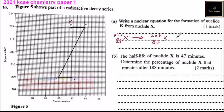So the equation is 213,83 X → 209,81 K + 4,2 He. That is how you write the equation to get one mark.